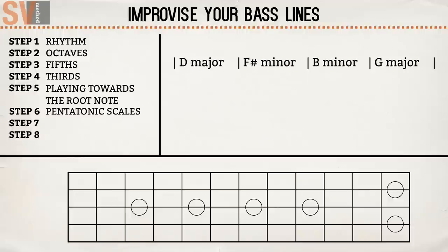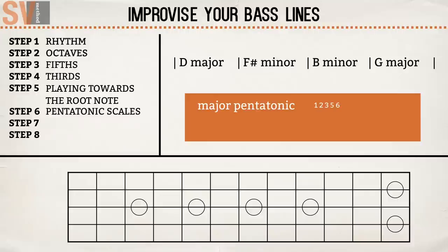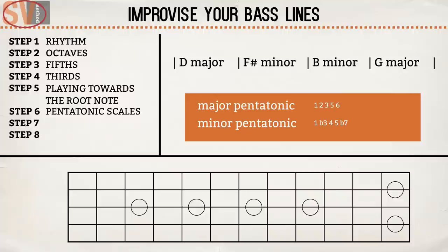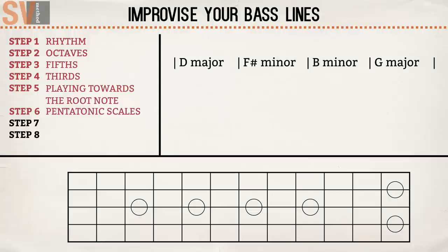The next step is to use pentatonic scales. We will use two scales. Major pentatonic can be used on every major chord. We already have the root note, third, fifth, and octave, and with this scale we add the intervals second and sixth. Why the pentatonic scale consists of these extra notes is explained at SV method. Let's combine all the steps so far.